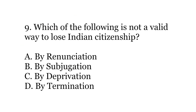Ninth question is: which of the following is not a valid way to lose Indian citizenship? Three of them are legally valid ways while one is not — you have to identify that. The options are A. By renunciation, B. By subjugation, C. By deprivation, or D. By termination.